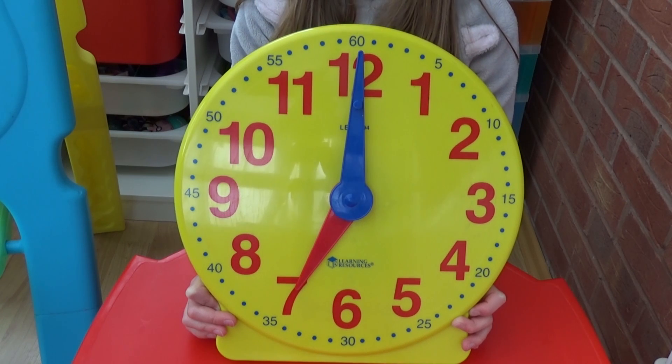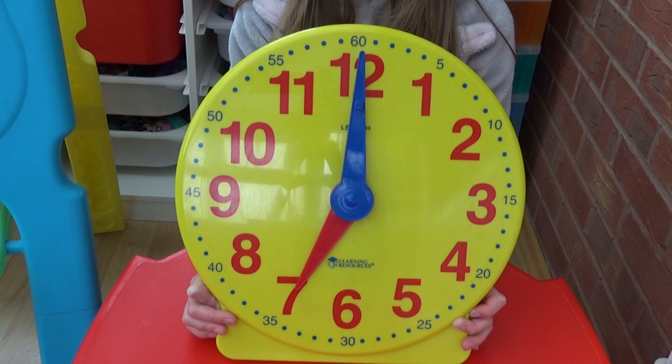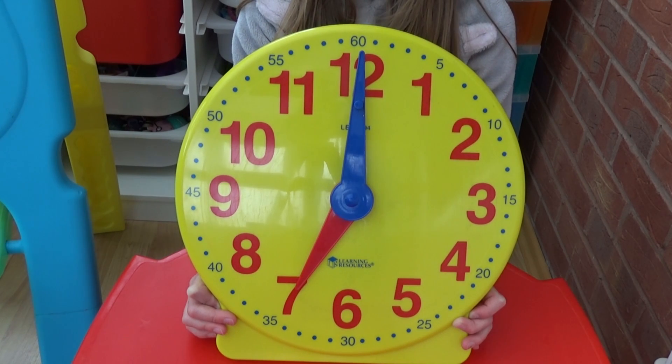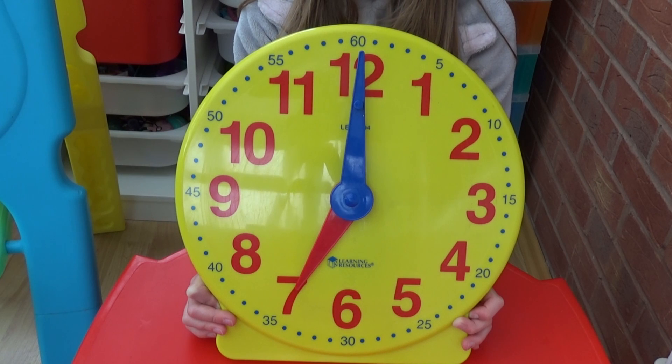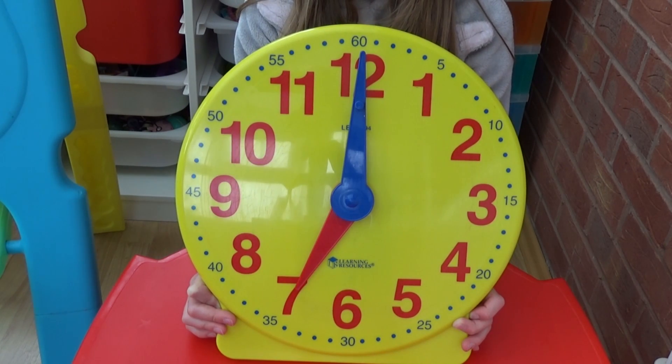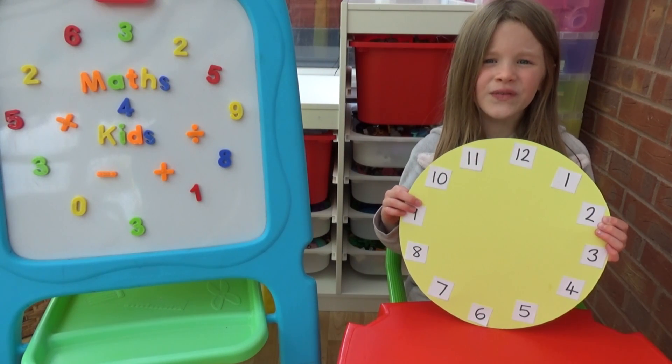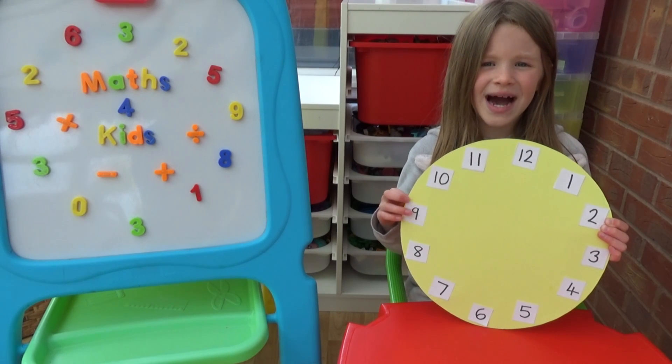If we look at the clock we can see the numbers 1 to 12, these are the hours. We're used to seeing number lines all the time in maths and although this is round it's really just like a number line. I've made a clock with the numbers 1 to 12 and I've also made an hour hand.